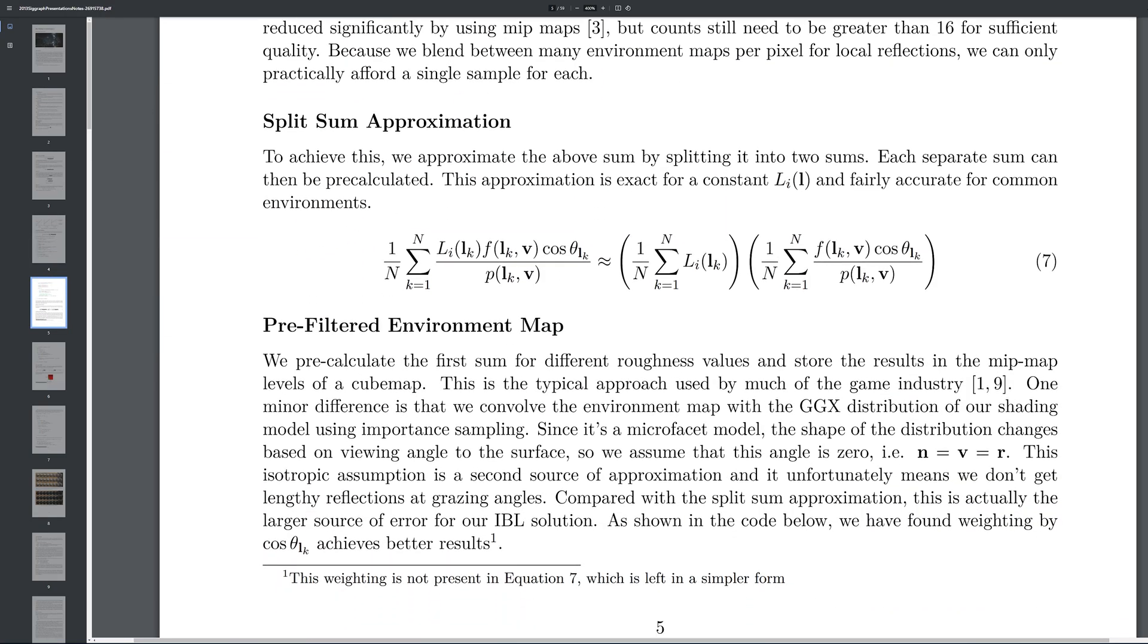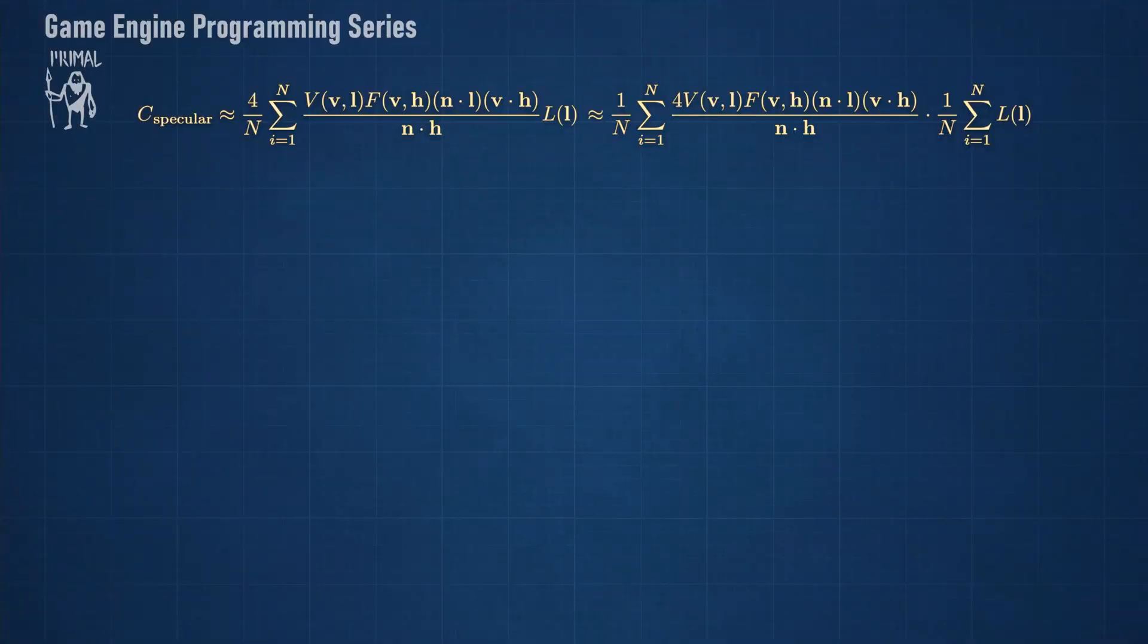It splits the sum into a part that depends on the view vector and the surface roughness, and another part that depends only on the environment cube map. Of course, this is mathematically incorrect and doesn't give the same result as the original sum, but as it turns out, the error is fairly small and the result is visually plausible.